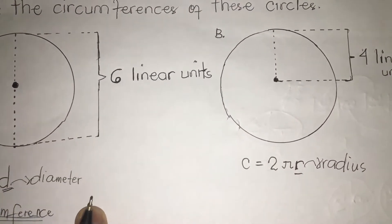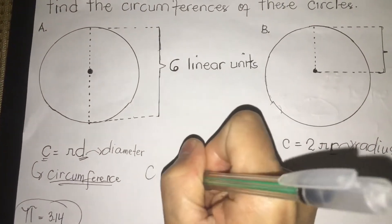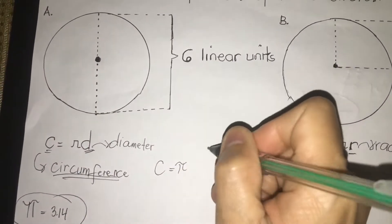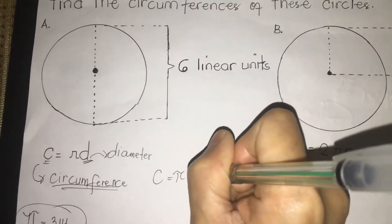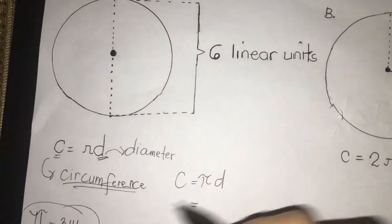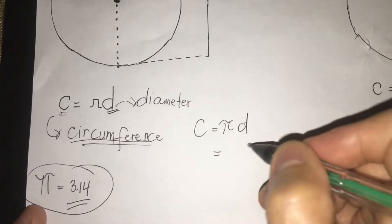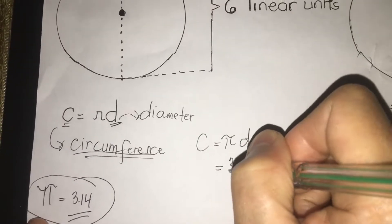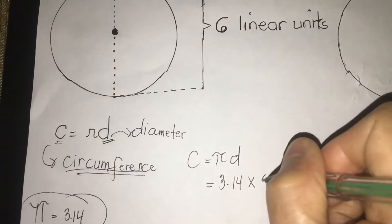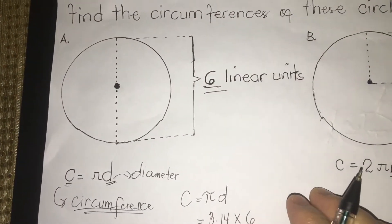Let's go back to letter A. We are going to write now C equals pi D. Next equal, should be organized guys. We're going to write the value of pi, which is 3.14 times 6. Where did I get 6? We're given 6 linear units.